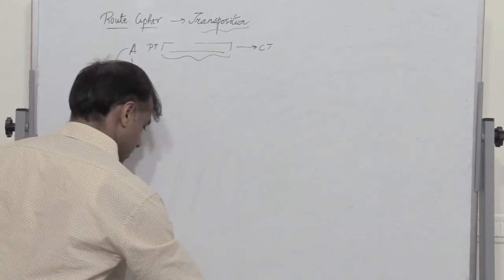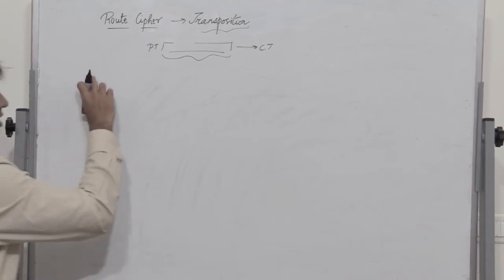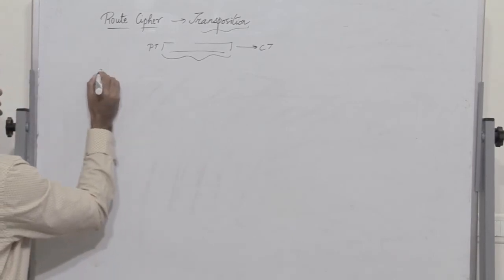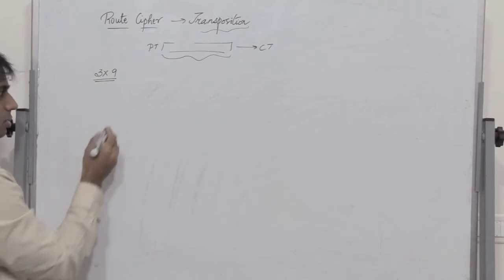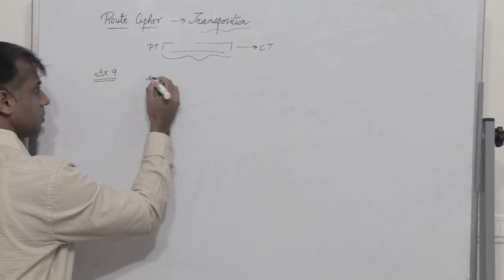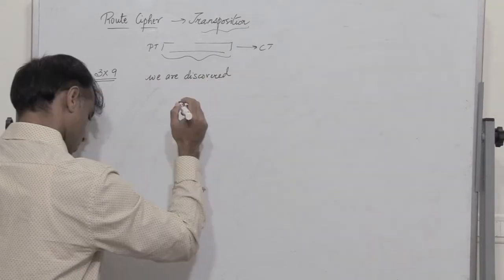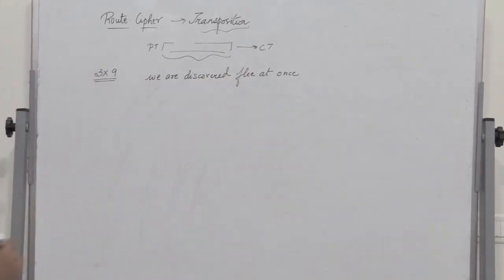So now let us see what a root cipher is. In a root cipher, the plain text alphabets are written in the form of a grid or in the form of a matrix. So let me write all the plain text alphabets along a 3 cross 9 grid. So let the plain text be: We are discovered. Flee at once.